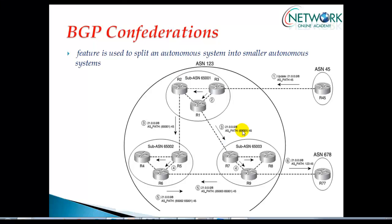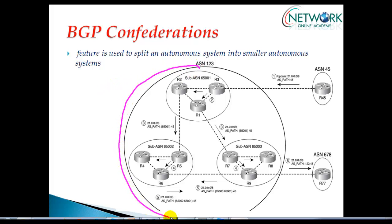In this section we will talk about BGP confederations feature. BGP confederations is a feature which is going to split one big autonomous system number into multiple small autonomous system numbers.